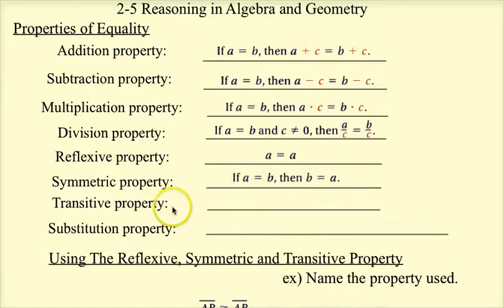Transitive property you should know, but it's also very similar to substitution, and a lot of times we just use the word substitution. But the transitive property says if A equals B and B equals C, then A equals C. So if the first thing equals the second thing, and the second thing equals the third thing, then the first and the third have to be equal to each other.